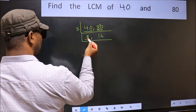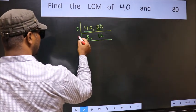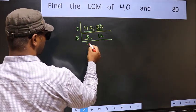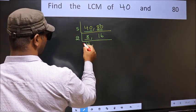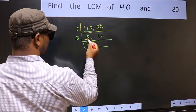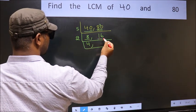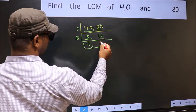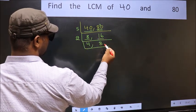Now here we have 8. 2 times 4 is 8. The other number is 16. When do we get 16 in the 2 table? 2 times 8 is 16.